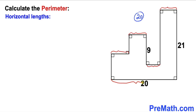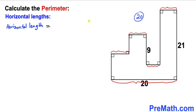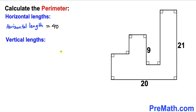Now let's focus on the horizontal length at the bottom — this is also 20 units. Therefore, our total horizontal length is going to be 20 plus 20, which gives us 40 units.